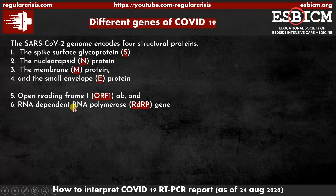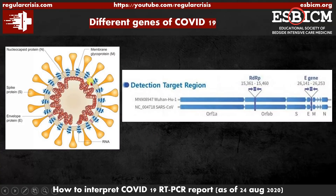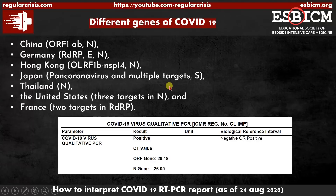And RNA-dependent RNA polymerase. These are the genes present on the COVID-19 virus. You can see the membrane protein, nucleocapsid protein, spike protein, and envelope protein, and the target regions are ORF1A, ORF1AB, and RDRP. This is the basic structure of the COVID-19 virus.